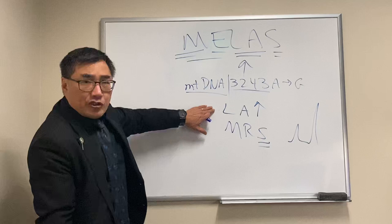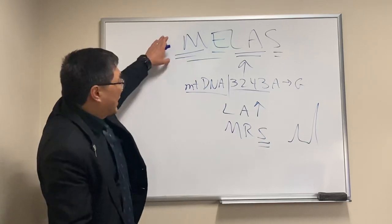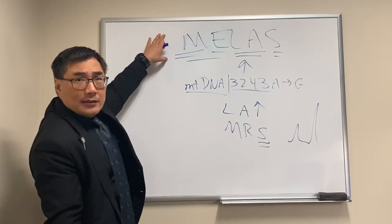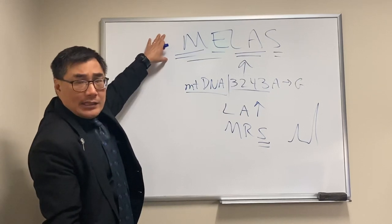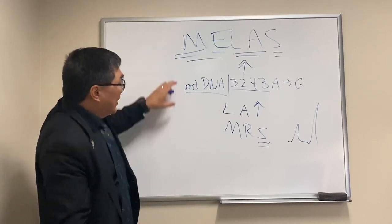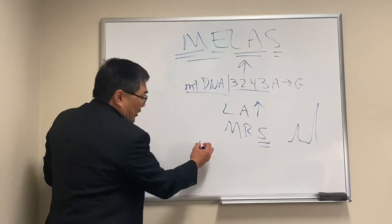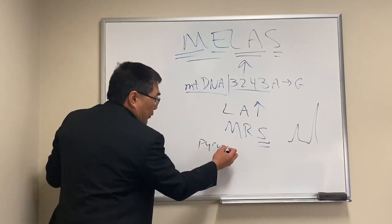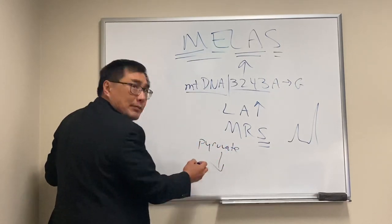You can also measure this in the blood. As you know, the mitochondria are utilizing the Krebs cycle to gain the ATP out of glycolysis. And so if you have a mitochondrial deficit, the pyruvate, which is the entry molecule into the Krebs cycle,